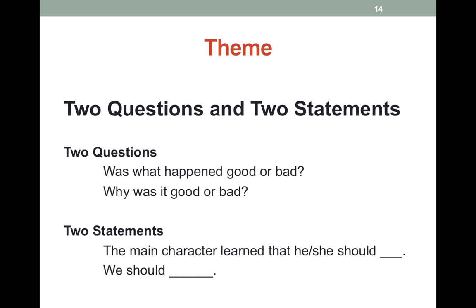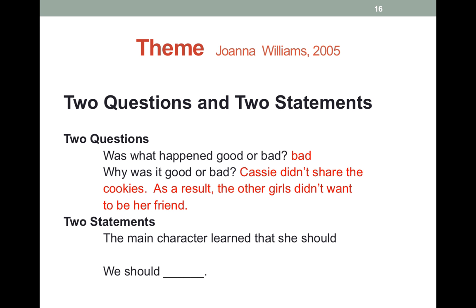Now again, we can apply the structure of two questions and two statements. Was what happened in this story good or bad? Now again, we're doing a we do it this time, so we want to get some answers from our students. Really go ahead and call on students to answer these questions and help them along with them. So, we would determine that what happened in this story was bad. And then we would start asking why questions of our group and let them add a lot of input here. Well, Cassie didn't share the cookies and as a result, the other girls didn't want to be her friend.